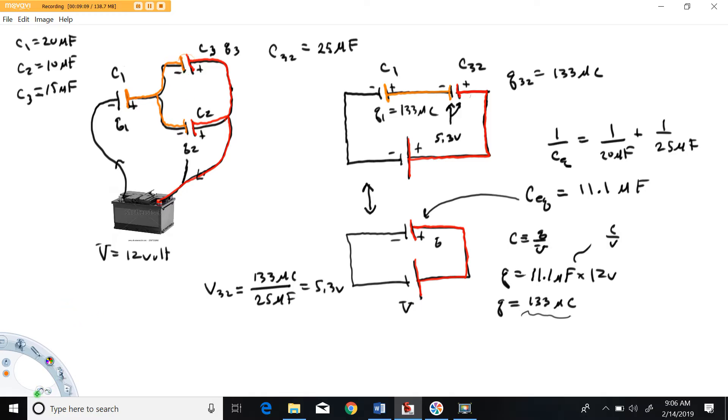So charge 3 is going to be the capacitance of capacitor 3, 15 microfarads, times the voltage red to orange which we calculated at 5.3 volts. Somebody give me 15 times 5.3. 79.5 microcoulombs. Charge 2 can be calculated the same way. We'll take the capacitance of capacitor 2, 10 microfarads, times the voltage red to orange which was the 5.3 volts. 53 microcoulombs. Remember a farad is a coulomb per volt.